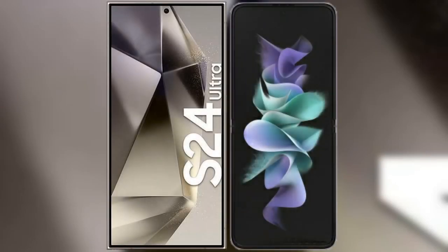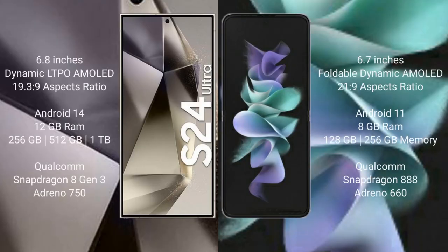I will compare the new Samsung Galaxy S24 Ultra with Samsung Galaxy Z Flip 3. The Samsung Galaxy S24 Ultra comes with a 6.8-inch Dynamic LTPO AMOLED Display and aspect ratio 19.3:9. The Samsung Galaxy Z Flip 3 comes with a 6.7-inch Foldable Dynamic AMOLED Display and aspect ratio 21:9.